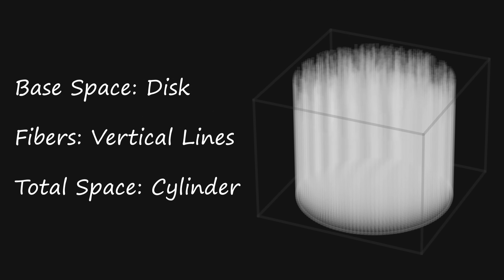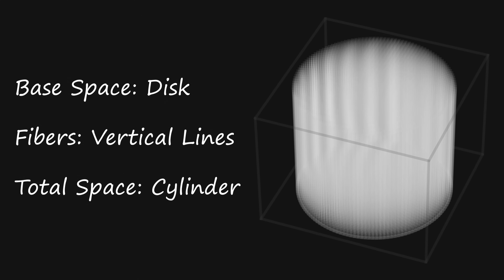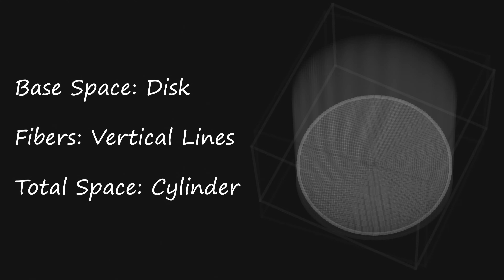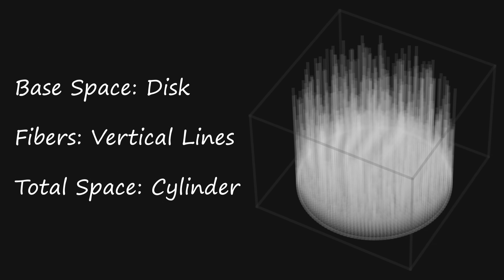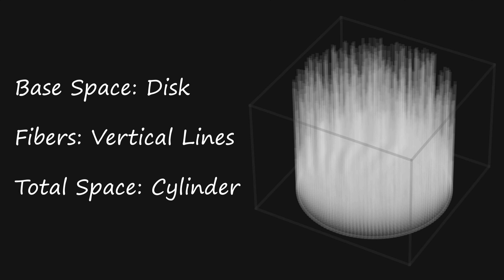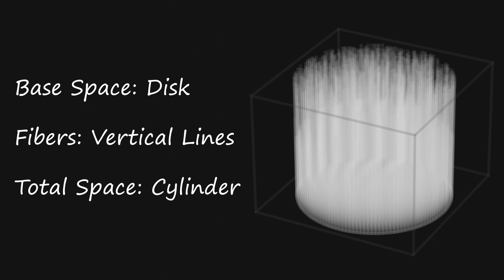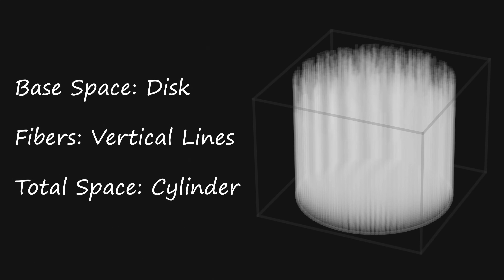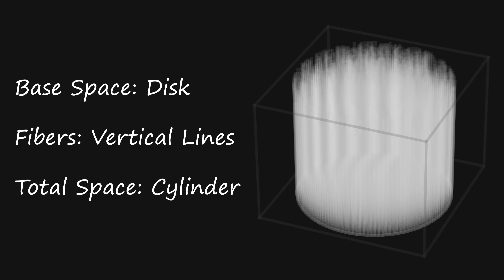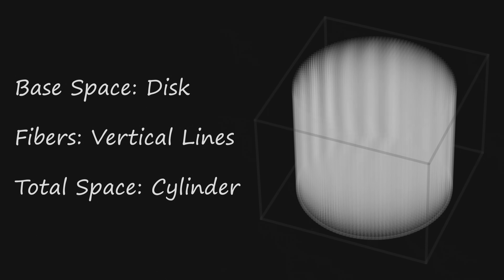In a fiber bundle, there are actually infinitely many fibers and they're all infinitely thin. Here I'm showing a finite number of fibers with some finite width, but in reality each fiber is an infinitely thin line segment that continuously fills the base space. So at any point in the total space, you can figure out what fiber that point is on, and then you can project it straight down to the base space.